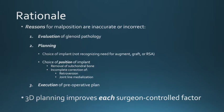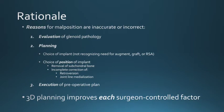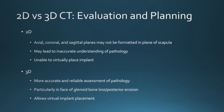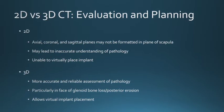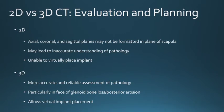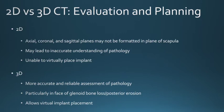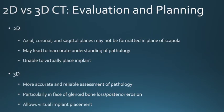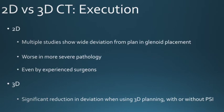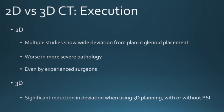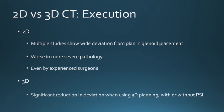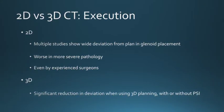Studies have clearly shown that three-dimensional planning improves each surgeon-controlled factor. Two-dimensional CTs are limited because the planes of acquisition may not be aligned with the scapular planes, leading to inaccurate understanding of pathology, and you are unable to virtually place an implant. Three-dimensional planning is more accurate and reliable, particularly with glenoid bone loss and posterior erosion common in osteoarthritis. Multiple studies show wide deviation from the preoperative plan when using 2D CTs, even in the most experienced hands, and 3D planning significantly reduces deviation with or without a patient-specific instrument.